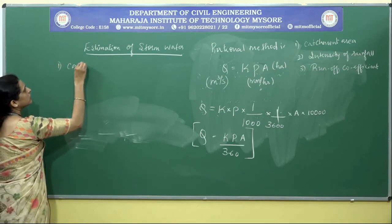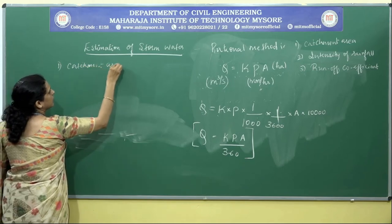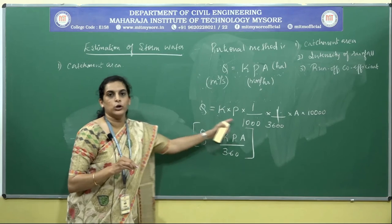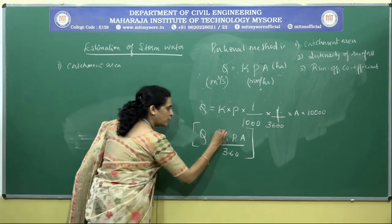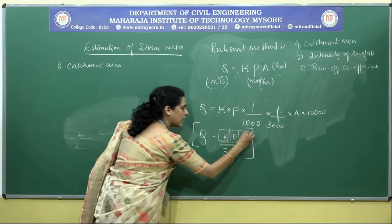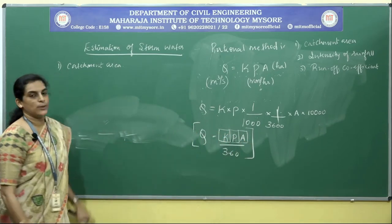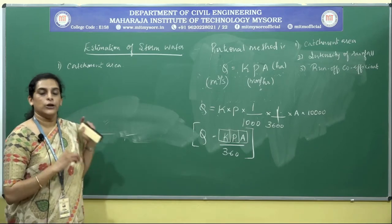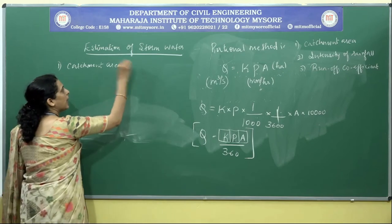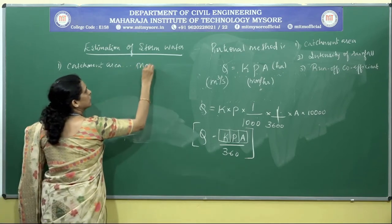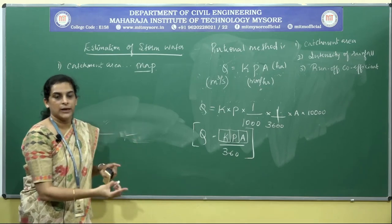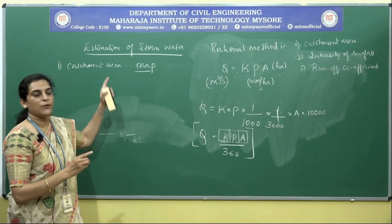The first factor is the catchment area. We are supposed to determine all these things to estimate the quantity of rainfall using the rational formula — that means we need to know the runoff coefficient, the intensity of rainfall, and the catchment area. To determine the catchment area, we use the map of the selected locality where the sewer has been laid.